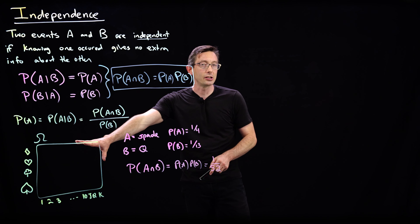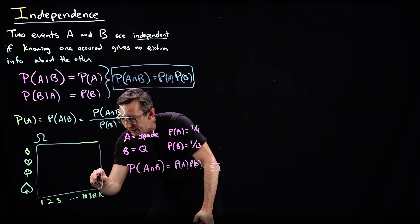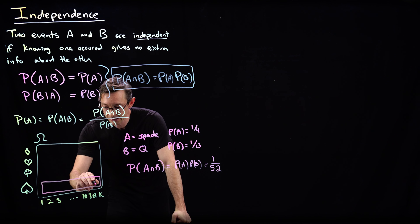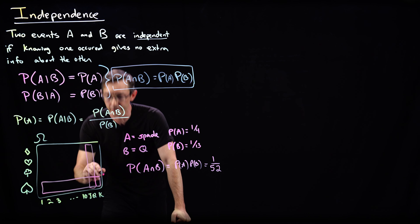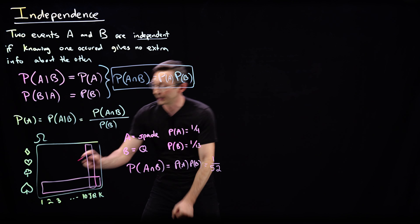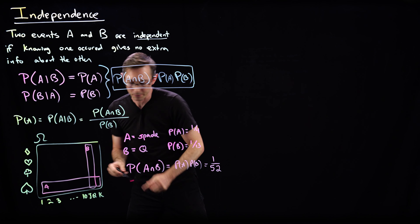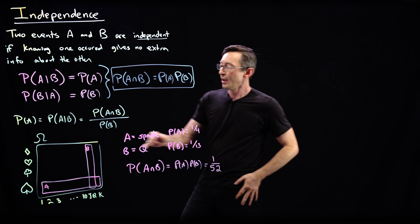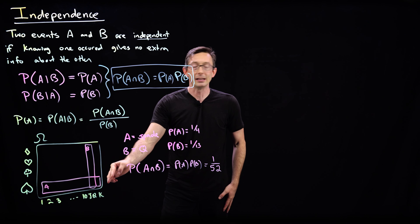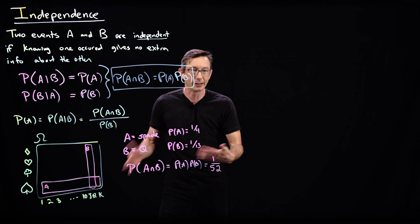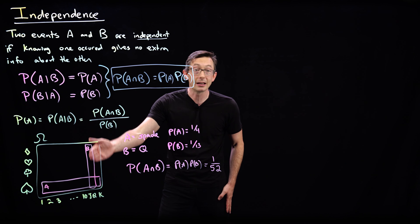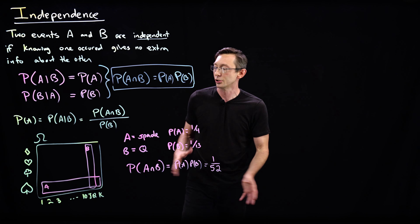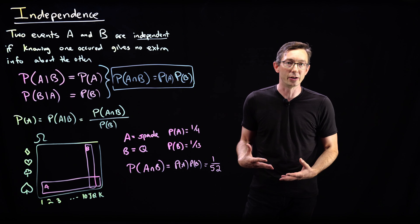I like this because you can draw a really cool picture. The set of all spades is this quarter down here, and the set of all queens is this one-thirteenth vertical strip. By a kind of symmetry, these are orthogonal. If I restrict myself to just spades, I still have a one in 13 chance of being a queen — my probability didn't change. And knowing I had queens, I still have a one in four chance of getting a spade. A really simple idea to illustrate independence.